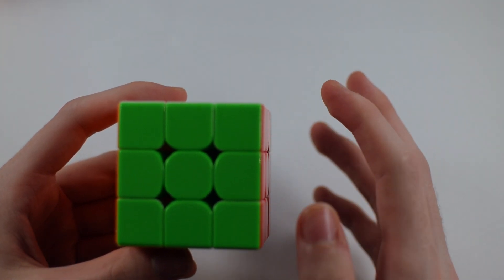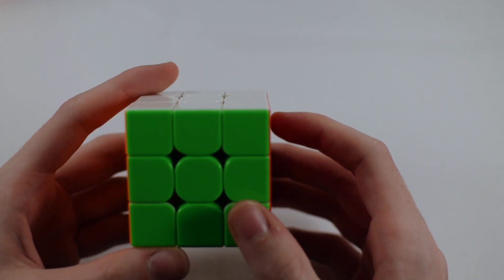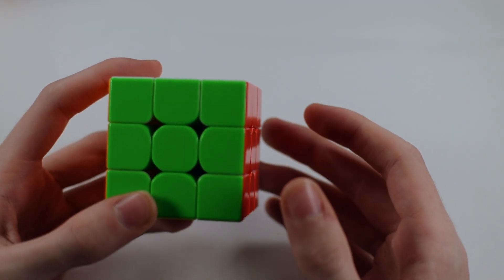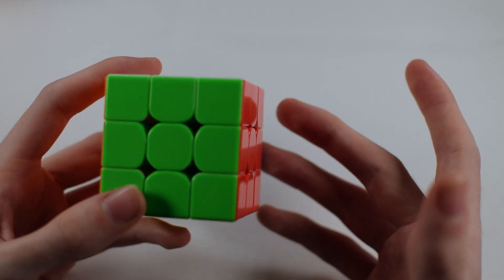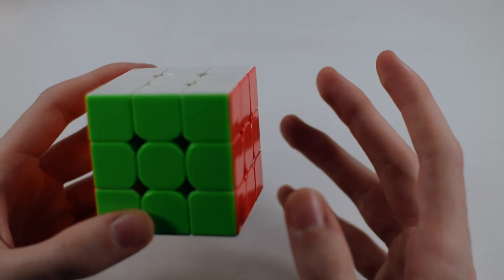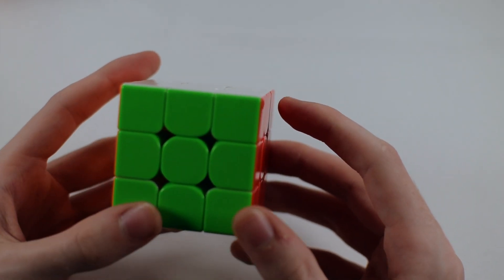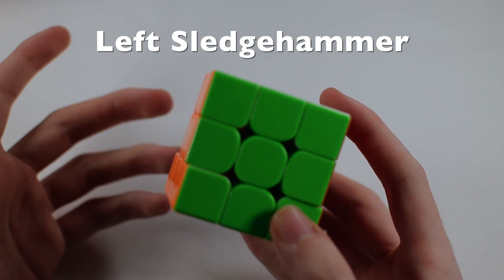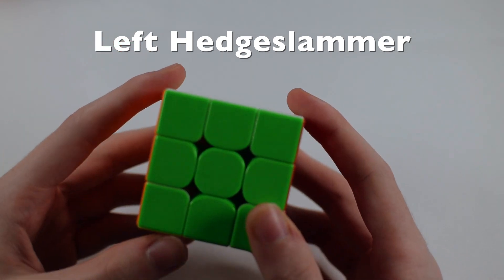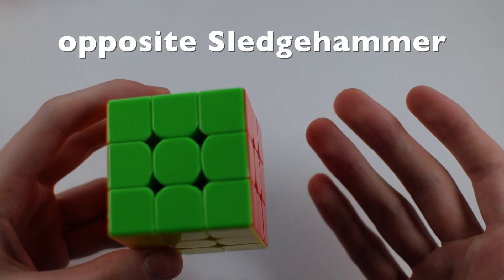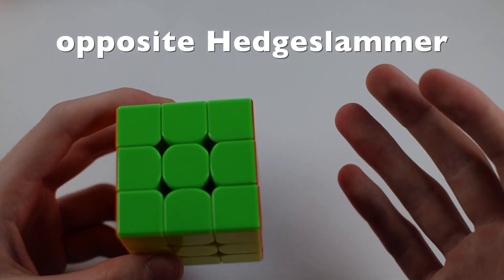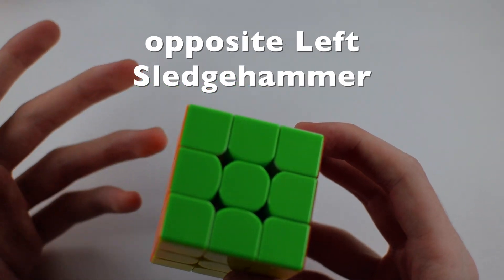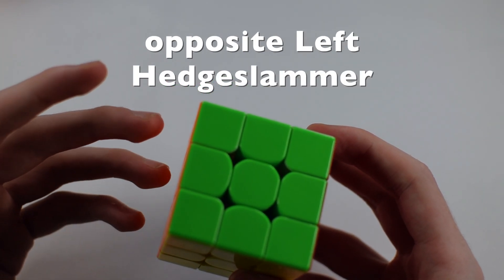The eight algorithms I will list. I'm going to show you each one and the names. So the first one is called the sledgehammer, of course, and it should be pretty straightforward. So the algorithms are named the sledgehammer, the hedge slammer, the left sledgehammer, the left hedge slammer, the opposite sledgehammer, the opposite hedge slammer, the opposite left sledgehammer, and the opposite left hedge slammer.